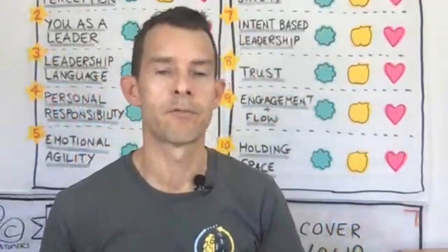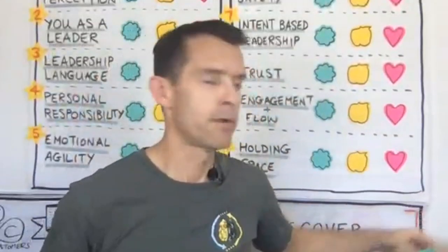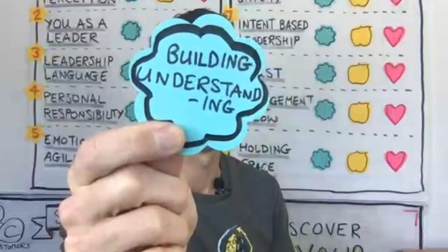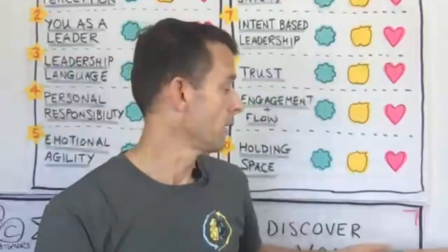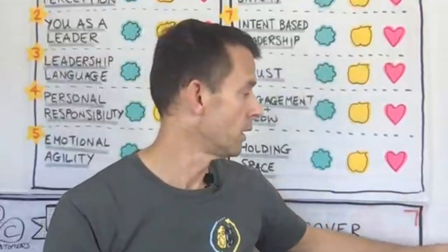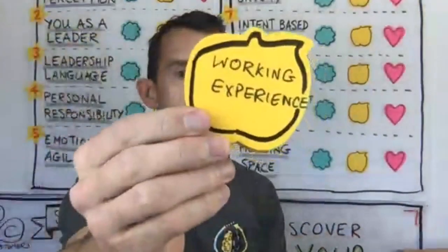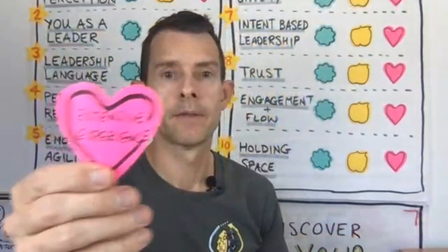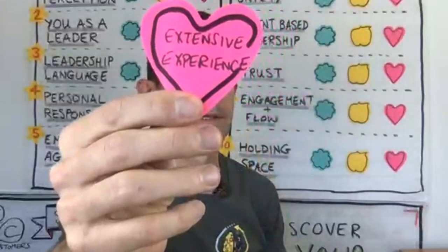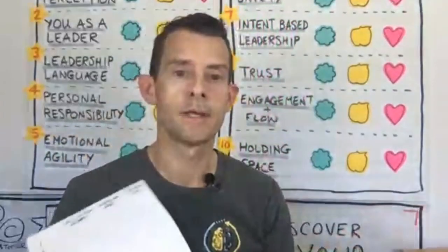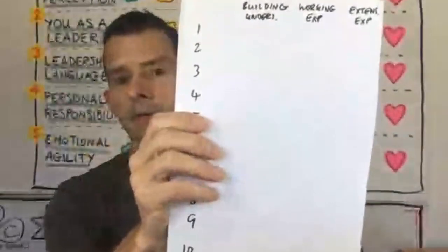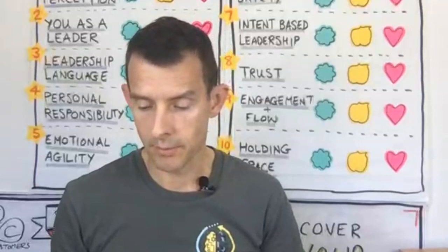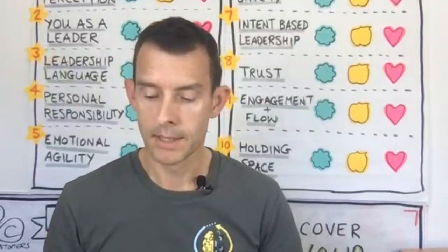As we go through each topic, I'm going to get you to pause and self-reflect. There are three scoring levels. The lowest score means you are building an understanding — that's your entry level, still learning. The middle score represents working experience — you're doing it and have some examples. The highest score is extensive experience. So rate yourself low, middle, or high on each of the 10 topics as we go through.